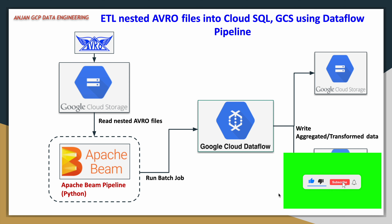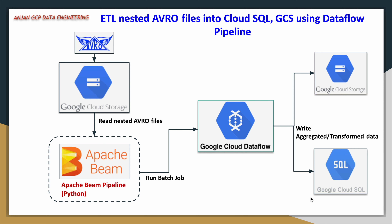Coming back to our architecture — I wanted to show you how to write data into relational databases, so I have taken Cloud SQL as an example. In my previous videos I haven't shown how to write data from an Apache Beam pipeline to a relational database table, so I wanted to cover that use case as part of this demo.